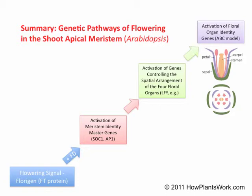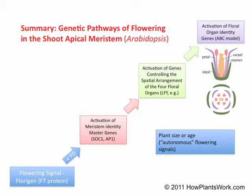There are other factors that trigger flowering besides photoperiod. There are so-called autonomous flowering signals that may be affected by plant size or age that also trigger flowering. Such autonomous flowering signals are thought to initiate the floral transition through activation of the meristem identity master genes. These genes may also be affected by the plant hormone gibberellin, especially in so-called rosette plants — think lettuce and cabbage, for example.